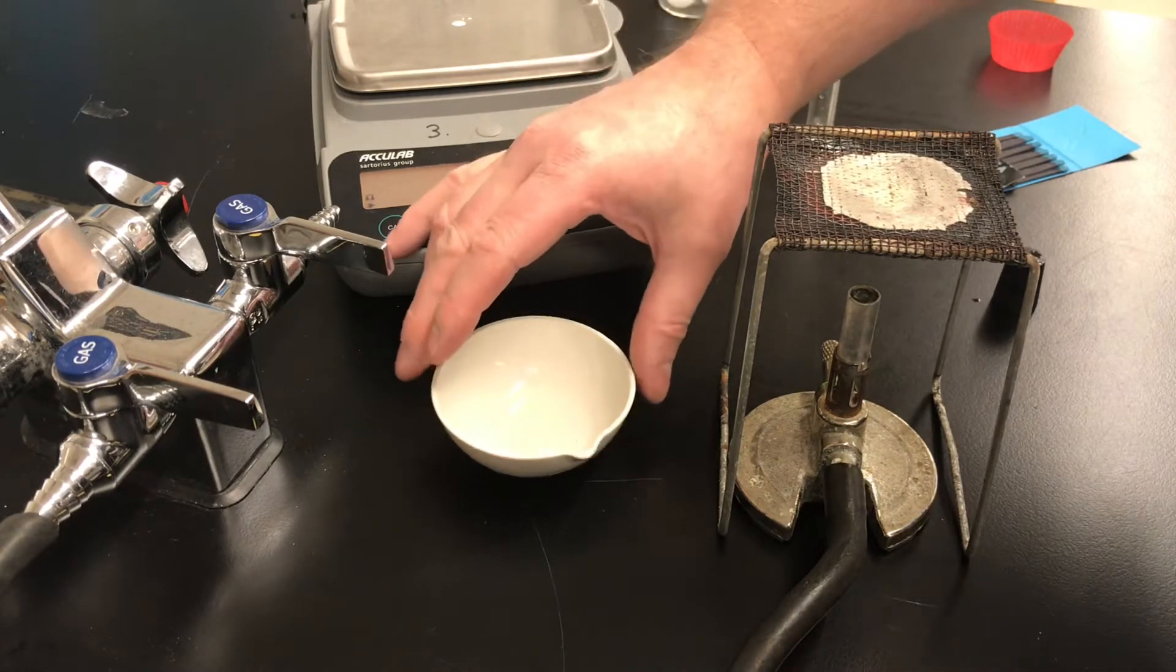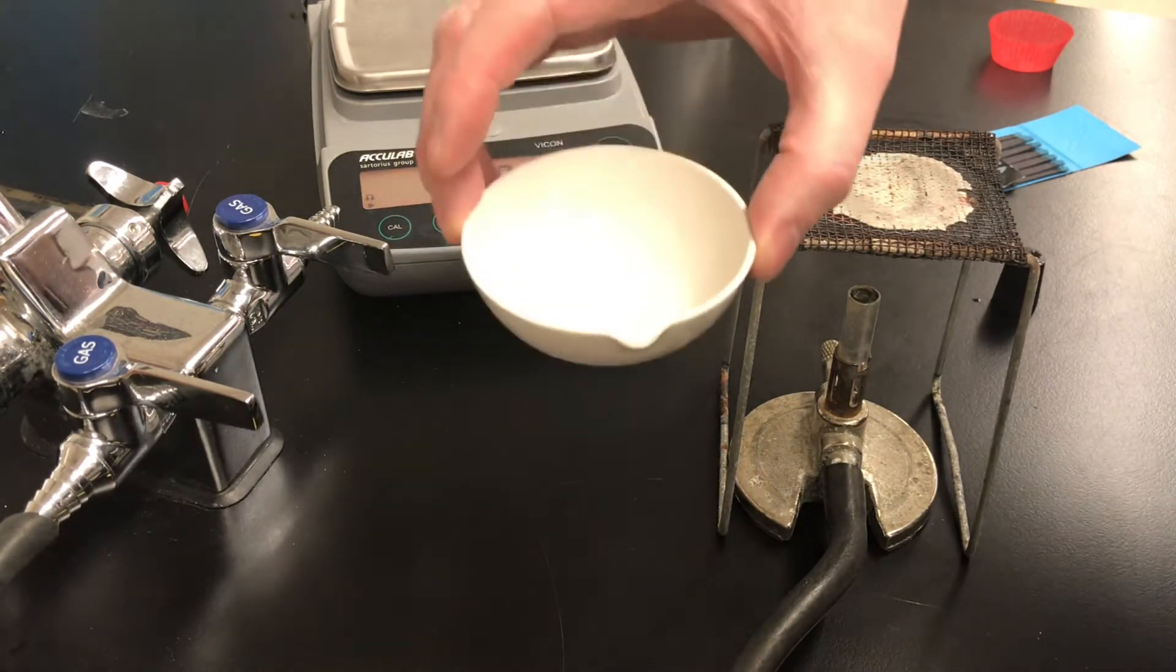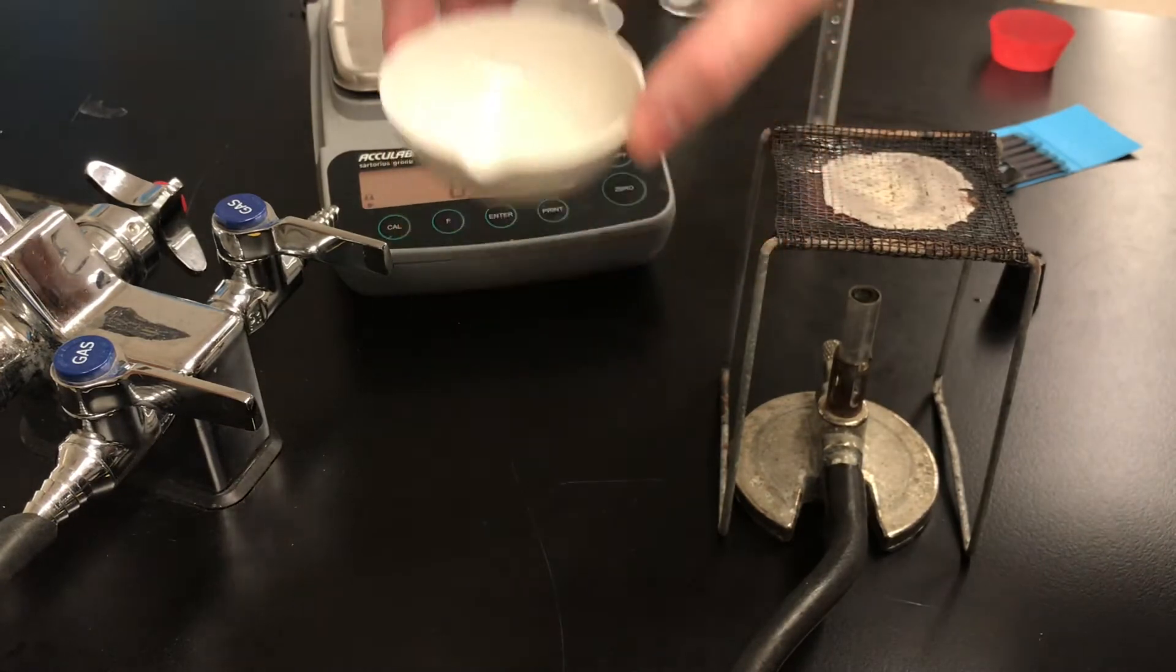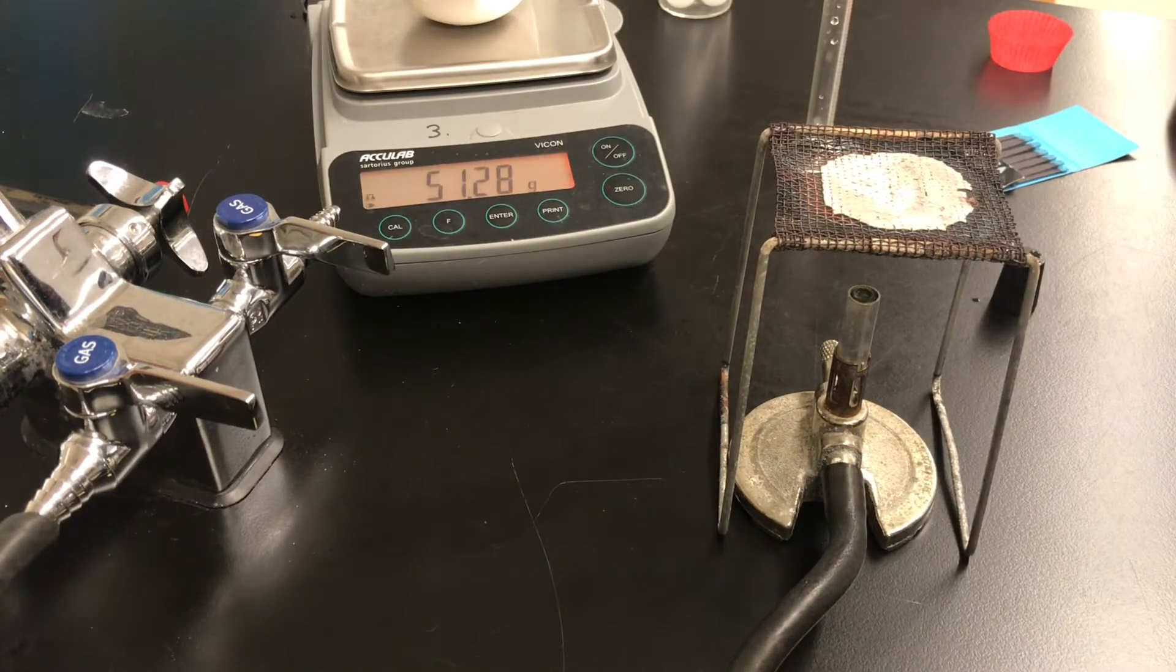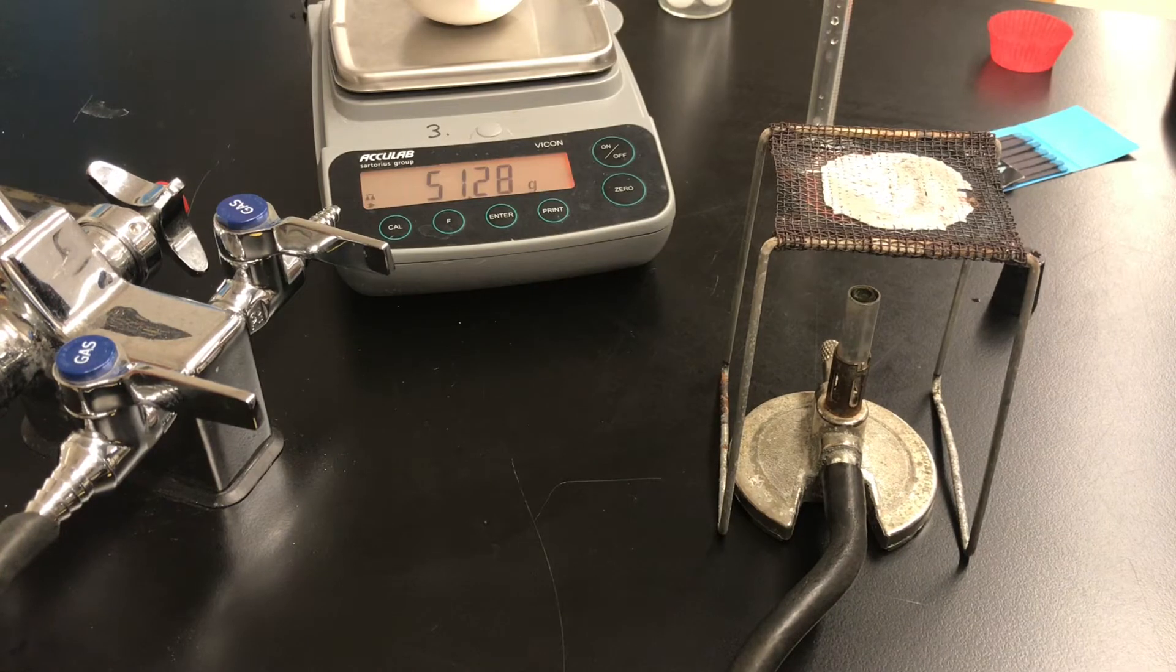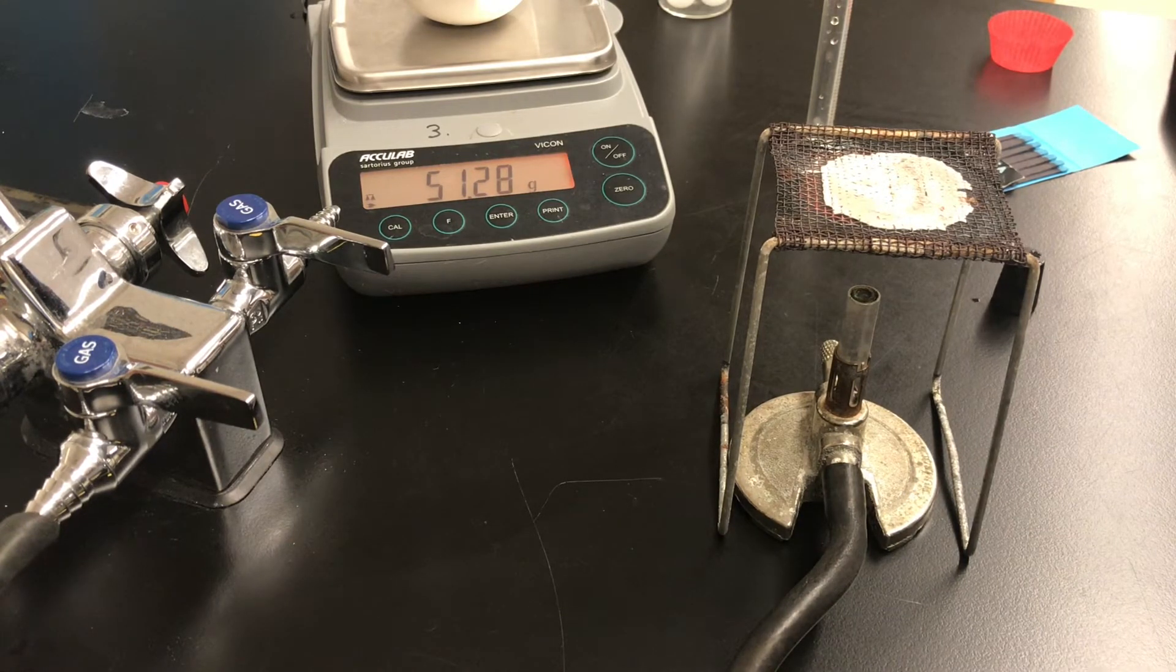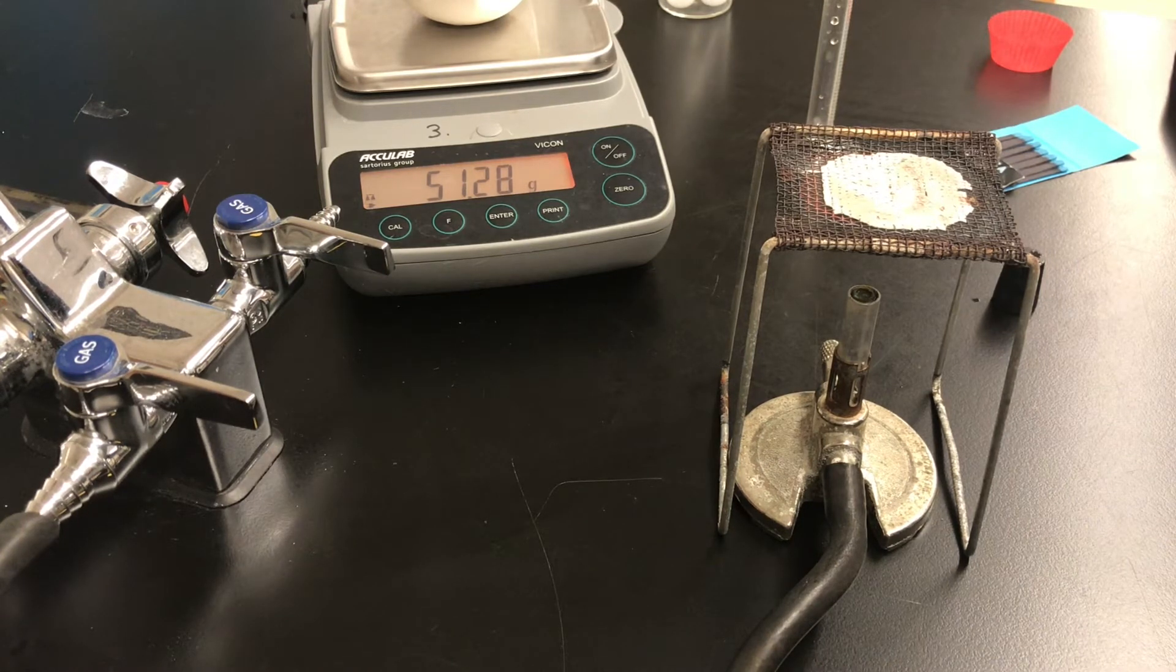Now the evaporating dish has some saturated solution in it. Let's look at the mass again. Record this mass in your data booklet. This is the mass of the evaporating dish with the saturated solution. It's about 51.28 grams.